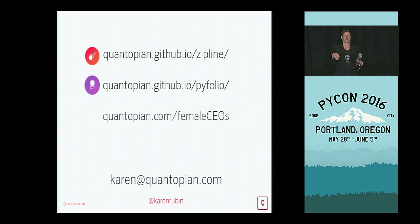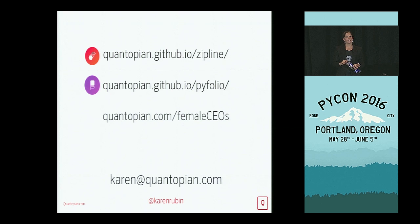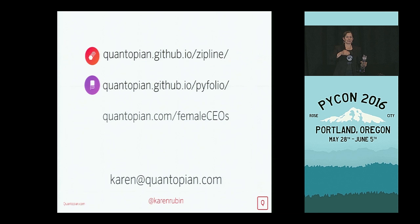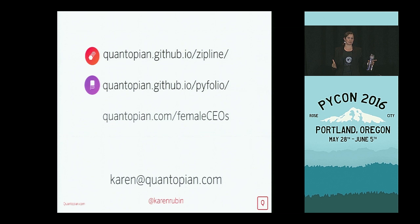Question: People use cherry-picked start dates to prove crackpot economic theories. Have you tried changing the start dates to see if it works over a wide variety of periods? Answer: Yes, I did that in a previous version of the talk. I looked at one year, five years, ten years — it holds true over the time period. I also have a version looking at just the last year and a half of out-of-sample data. My female CEO strategy outperforms the RSP by 3% over the last 17 months. So it continues to outperform, but not as dramatically. The longer you hold, there's more opportunity for it to do well, and some companies hold female CEOs for the entire simulation.